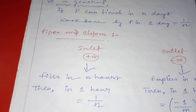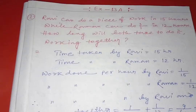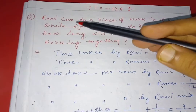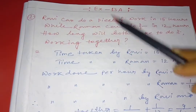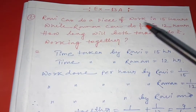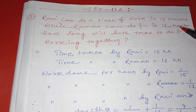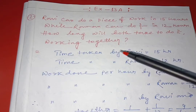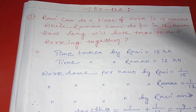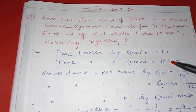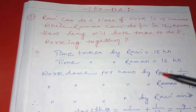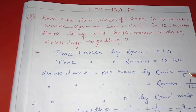Now you can go to the exercise. This is the first question — question number two — which says that Ravi can do a piece of work in fifteen hours while Raman can do it in twelve hours. How long will both take to do it if they work together? The time taken by Ravi is 15 hours and time taken by Raman is twelve hours. Work done per hour by Ravi is 1 by 15 and work done per hour by Raman is 1 by 12.